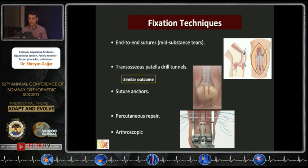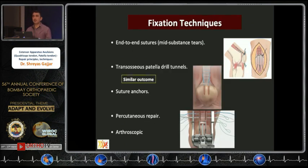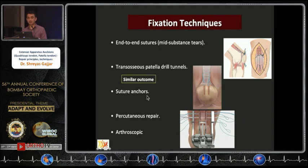The important surgical principles are to ensure that the edges are debrided and clean, and to aim for locking and grasping sutures through the tendon to ensure a good purchase and prevent re-rupture. For mid-substance tears, which are rare in quadriceps tendon ruptures, end-to-end sutures can be applied. The most common tear is at the superior pole, where the trans-osseous patella drill technique remains very popular. Of late, suture anchors — both absorbable and non-absorbable — have been used, with the advantage of minimized incisions. There is also a device called the PARS that allows percutaneous repair.